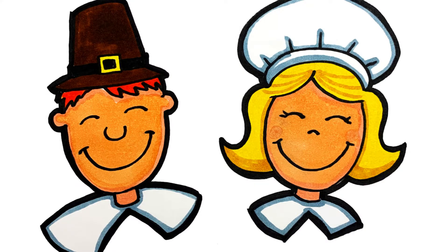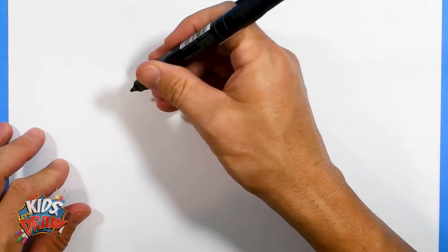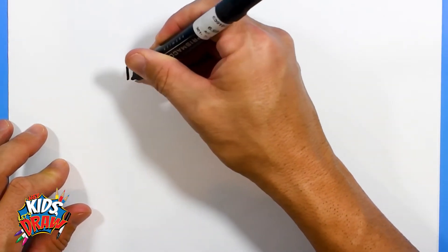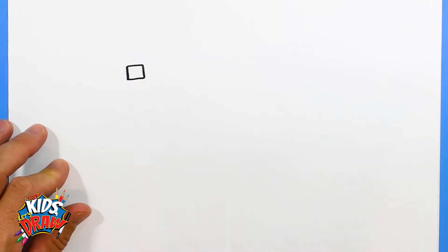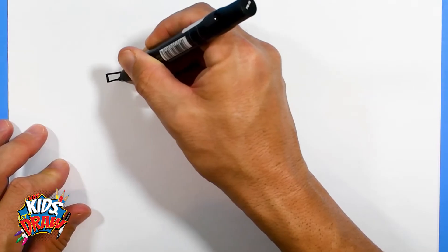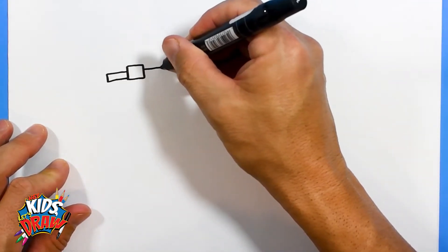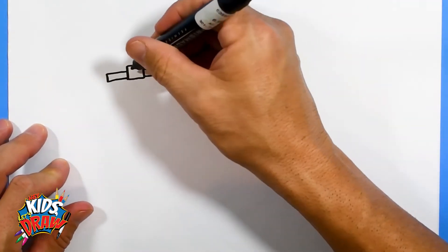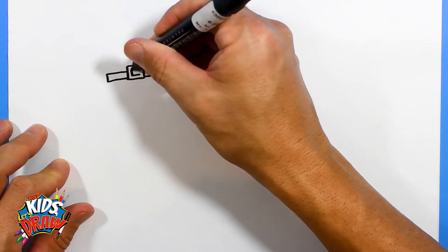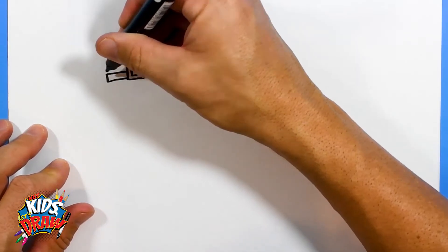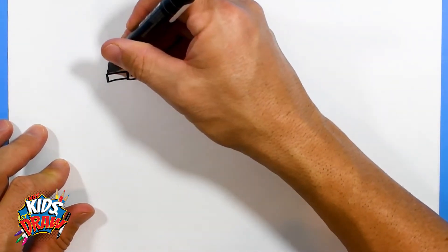First of all, we're going to do one face here for a male and over here for a female. So let's start here with a square, okay, and then a rectangle and another matching rectangle. This is for the buckle on the hat, and we can draw another square inside.